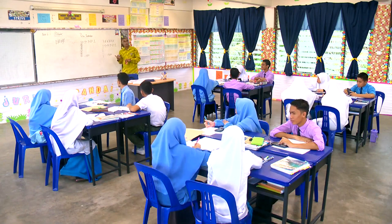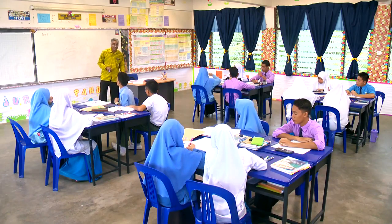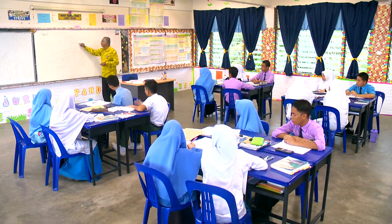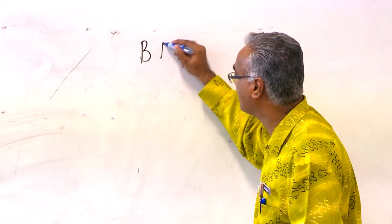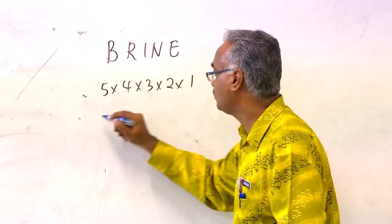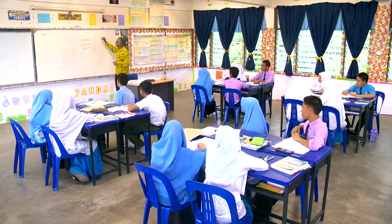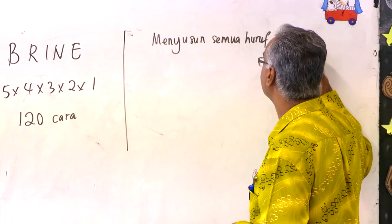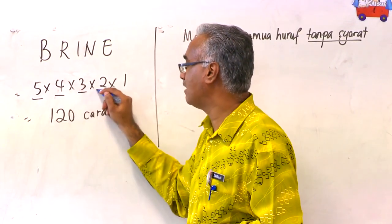Menyusun 6 digit ini, kita ada 720 cara. Apa akan berlaku kalau kita dah faham ini? Kita boleh susun dengan menggunakan petak, tetapi penggunaan kaedah petak ini bukannya sesuai sangat bila terlalu banyak. Kita ada cara-cara lain. Contohnya, perkataan BRINE tadi — saya tunjukkan 5 × 4 × 3 × 2 × 1, kita dapat 120 cara. Kita juga boleh menggunakan kaedah petua pendaraban ataupun 5 faktorial.